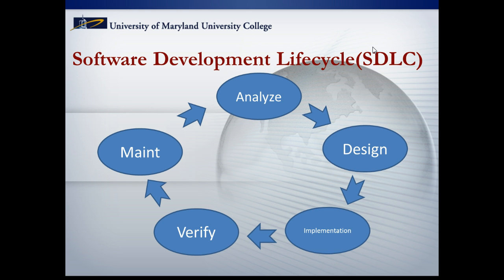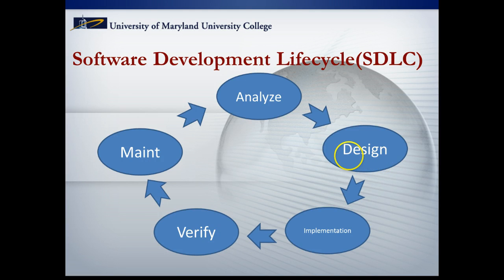Right now we're just creating entities — determining what the entities are going to be, what the relationships are between them, and what the attributes of each entity will be. Eventually we'll get into primary keys and foreign keys, but for now we are in the design phase, just modeling the database design with entities and the relationships between those entities. There is a big difference between an entity and a table — we are a long way from tables, so let's stick with entities for now.